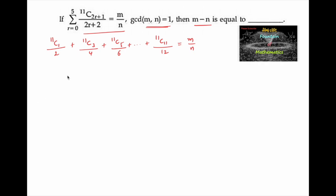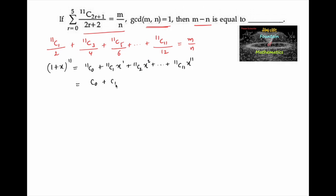To evaluate this, consider (1+x)^11, which equals 11C0 + 11C1·x + 11C2·x² + ... + 11C11·x^11. This can also be written as C0 + C1·x + C2·x² + ... + C11·x^11, where C0, C1, C2, ..., C11 are the binomial coefficients.